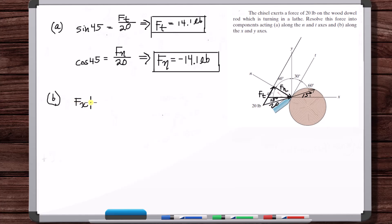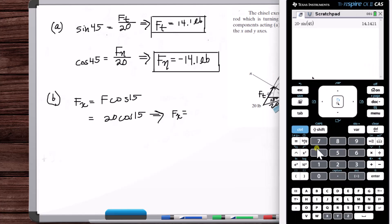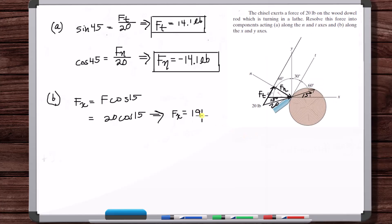So F_x is F cosine of 15. 20 cosine of 15. So 20 times cosine of 15 equals 19.3, and that's going to be in the positive X direction.